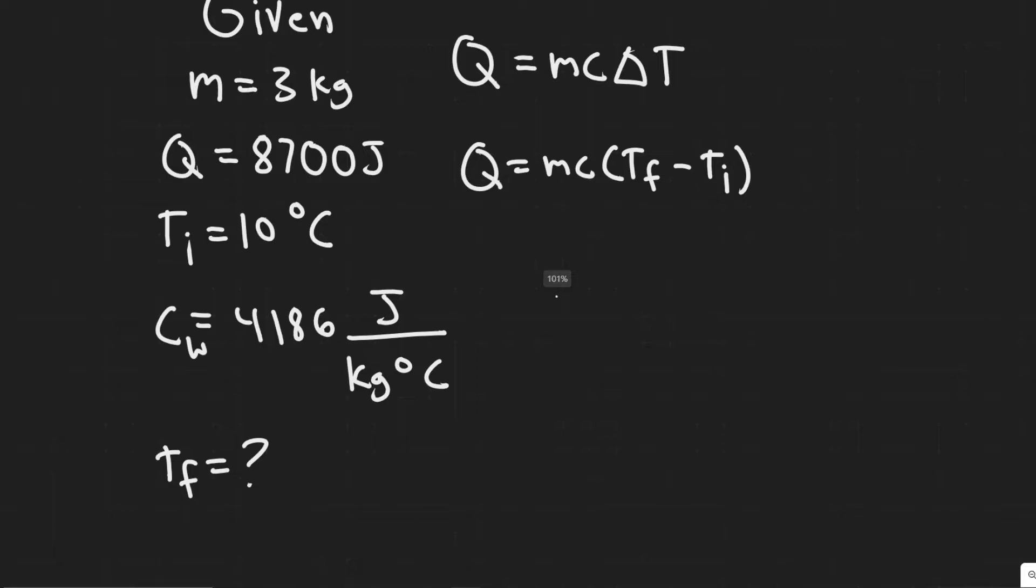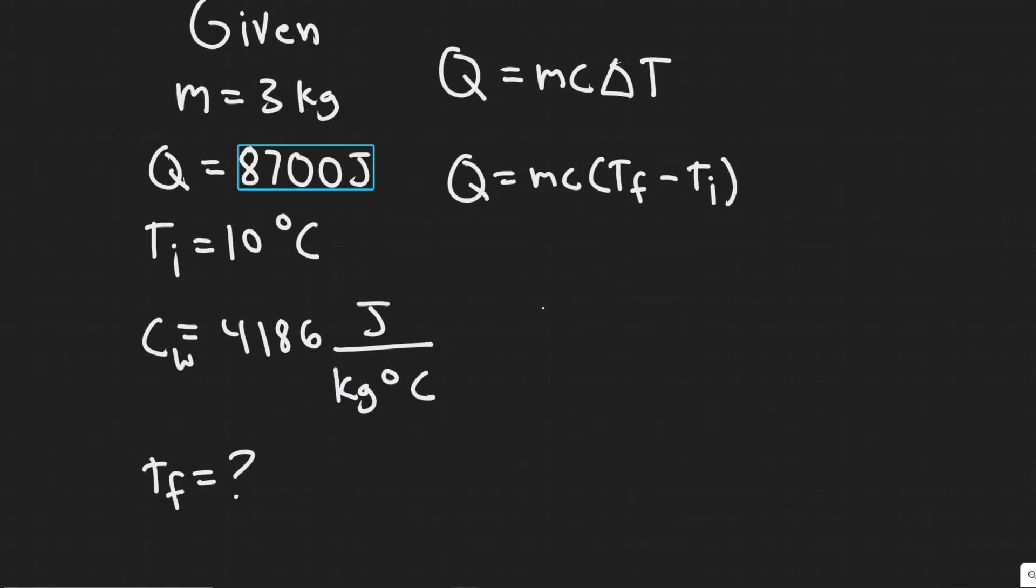Keep in mind, though, when you do this, there are different values for the specific heat capacity depending on the type of substance, but also the units have to make sense. So notice we're using joules here for energy, and then our temperature is in degrees Celsius, and then our mass is in kilograms.